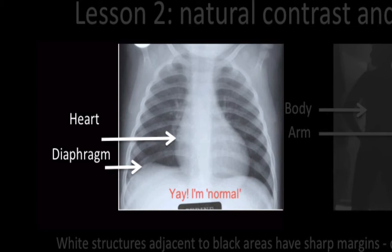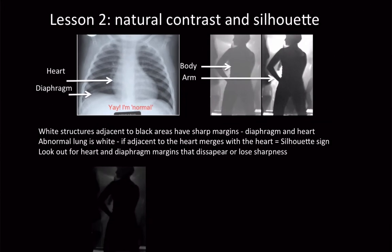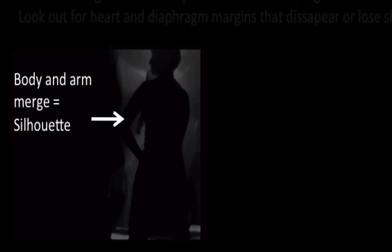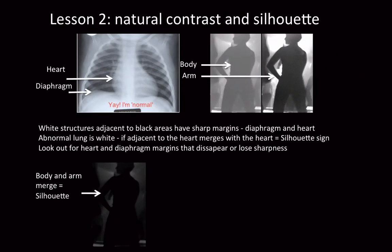When there's pathology, these margins become indistinct or are obliterated altogether. To illustrate with the lady's silhouette: look at the space between the arm and the lady's back — there's an area of light. If disease fills in that space, the outline of the arm disappears because there is disease adjacent to it. The same applies on a chest x-ray: the contrast between the air and the cardiac shadow will disappear and everything becomes one shadow.